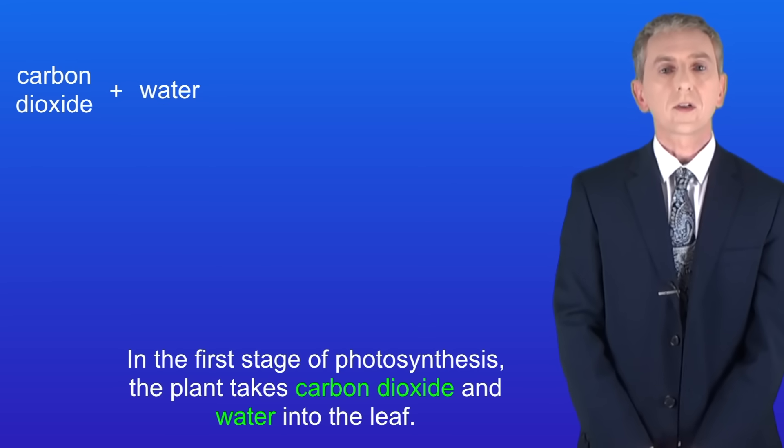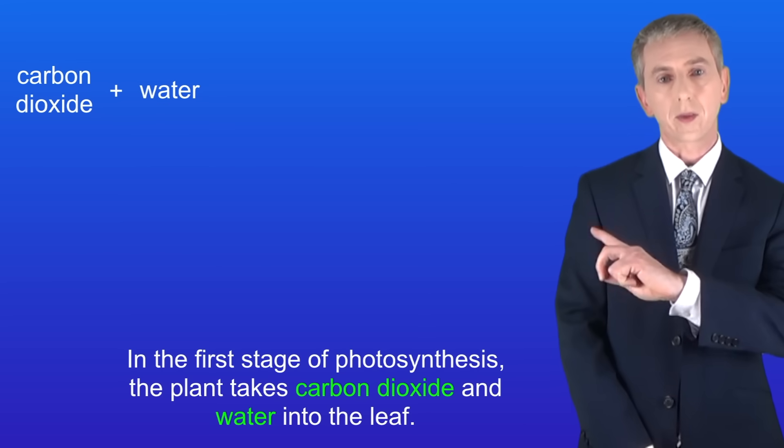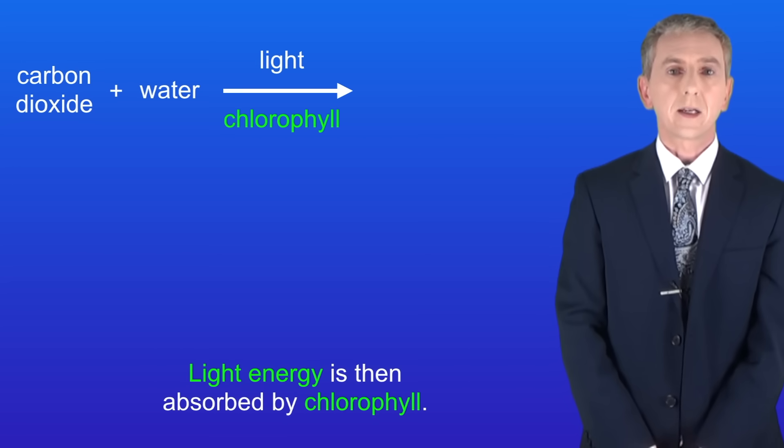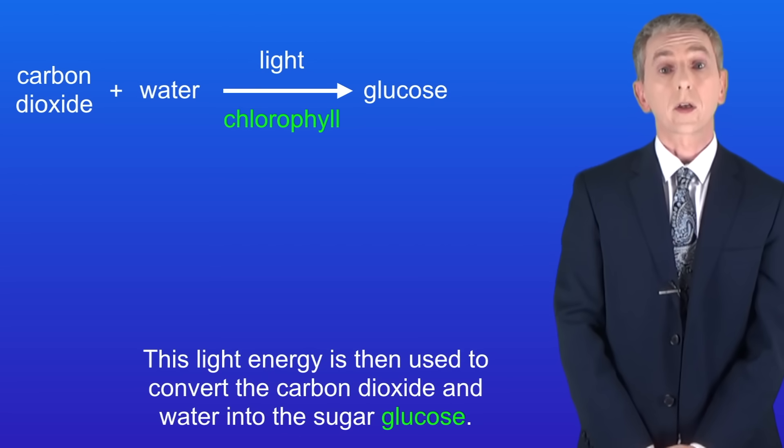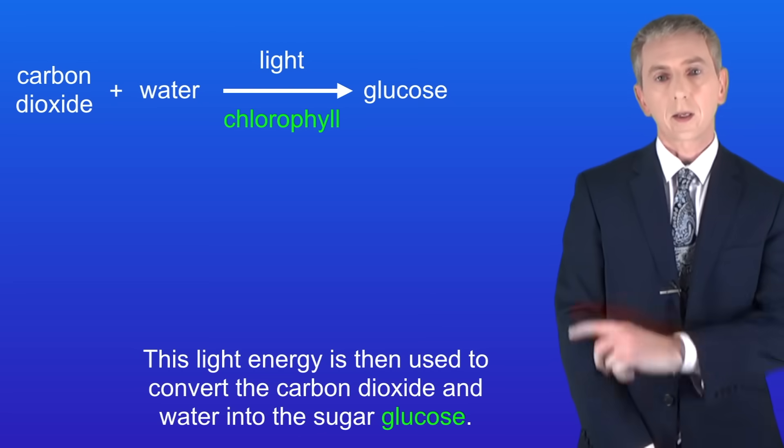In the first stage of photosynthesis, the plant takes carbon dioxide and water into the leaf. Light energy is then absorbed by chlorophyll. This light energy is then used to convert the carbon dioxide and water into the sugar glucose.